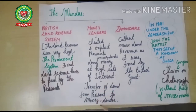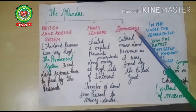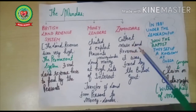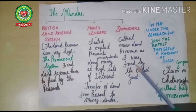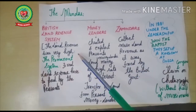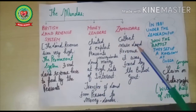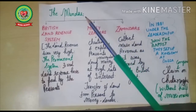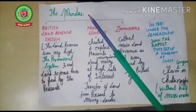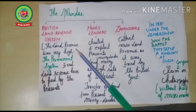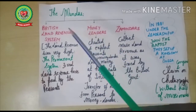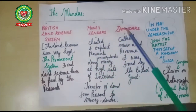Zamindars also exploited the Mundas by collecting even more land revenue than was fixed by the British government. The Munda peasants were uneducated and did not know the exact amount of land revenue they owed, so they ended up paying excessive amounts. They were thus exploited by three segments of society.